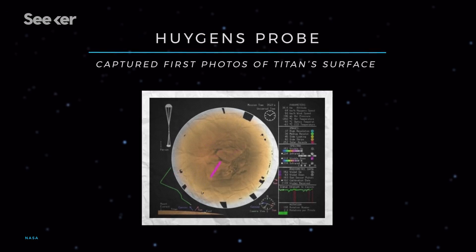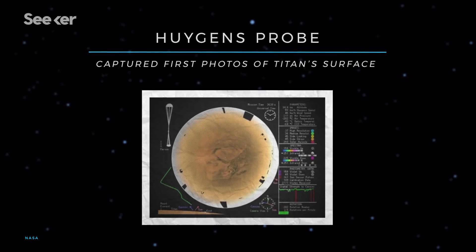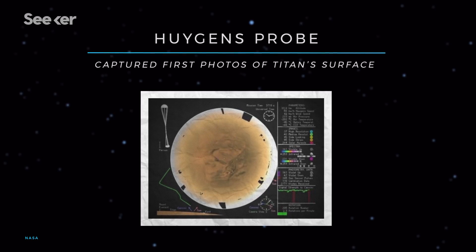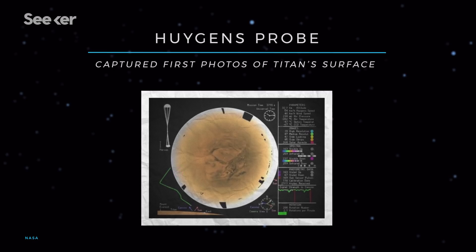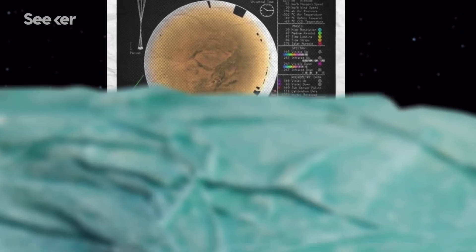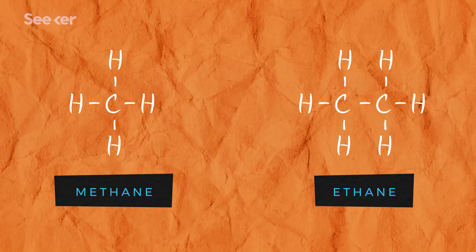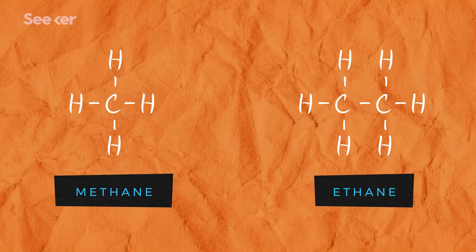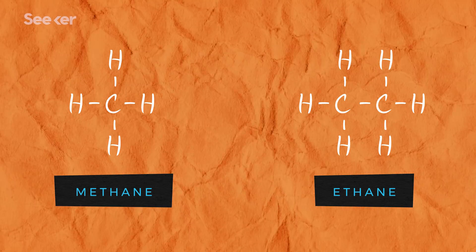Huygens' view gave NASA scientists their first look at the mysterious moon. And what got NASA really excited is that Cassini and Huygens' images revealed that Titan had lakes and seas filled with hydrocarbons like methane and ethane instead of H2O. These were the first lakes to be discovered beyond Earth.